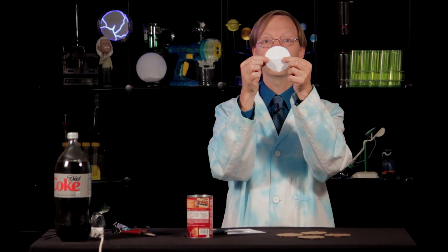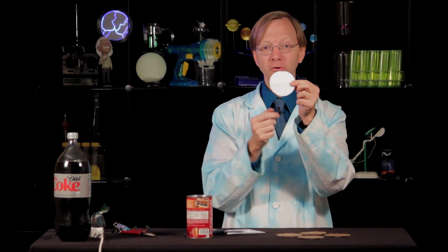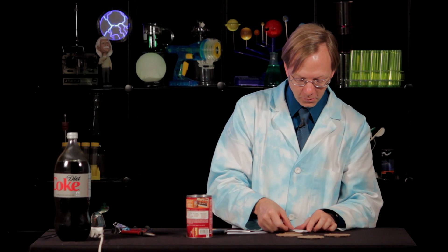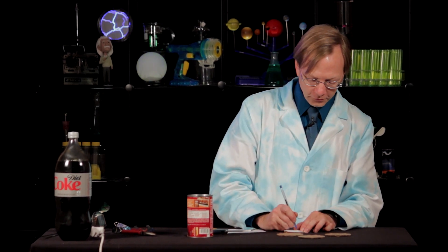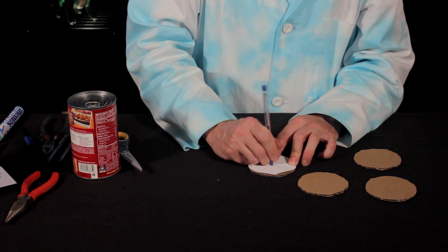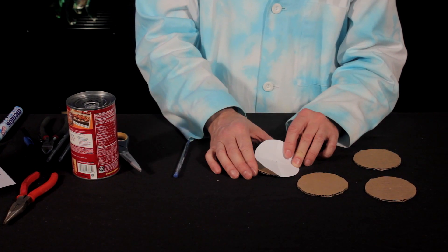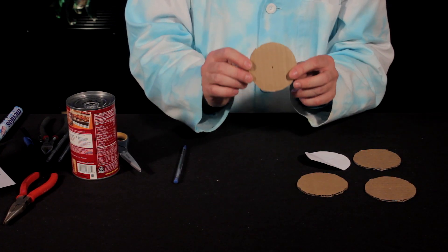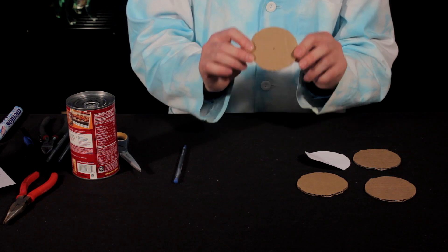When you unfold that, you have your center point where those two folds cross is the exact middle of that circle. Go ahead and put that on your wheel so it lines up perfectly, and then use your pen to poke a little hole into the wheel. That is your new center point. Go ahead and repeat it for all three other wheels.